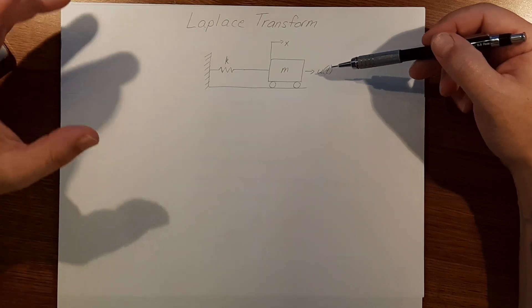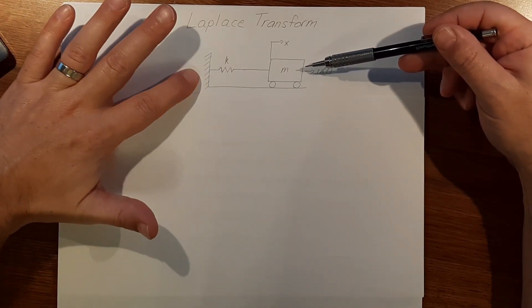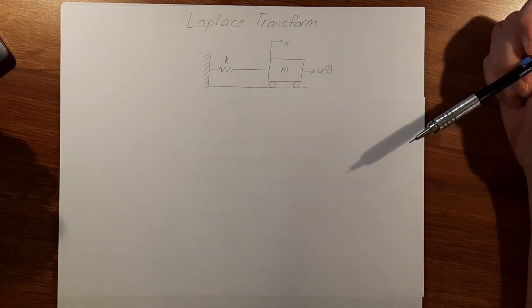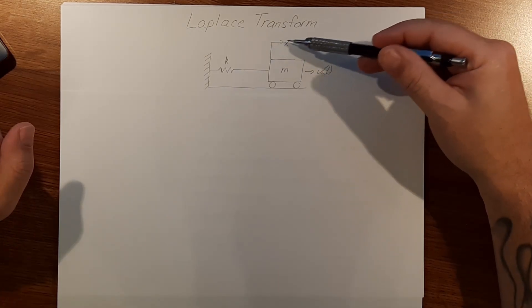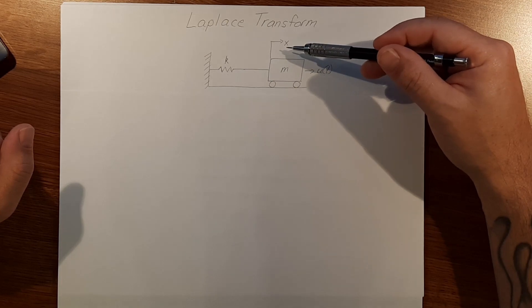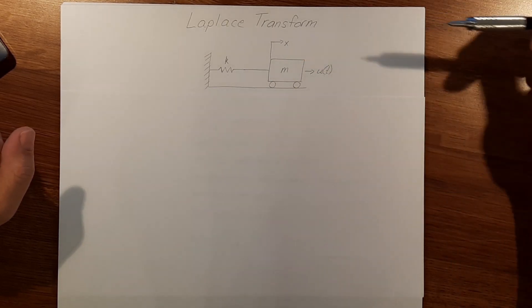It's a mechanical system with a mass that's attached to a secure surface with a spring with a constant of k. We're going to want to find out how this force u affects the position of the mass with respect to time.